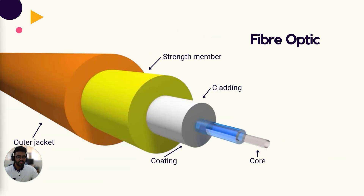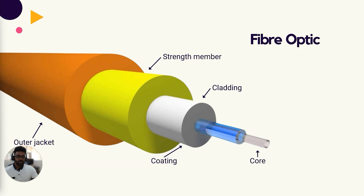There's one more bound network medium to be familiar with: fiber optic. Fiber optic cabling is quite different from coaxial or twisted pair — instead of electrical signals, it uses light pulses to transmit data. Fiber optic cables are constructed with a central core made of either clear plastic or glass, which carries light pulses. Surrounding the core is a layer of cladding with a reflective surface that redirects any stray light pulses back toward the center. Around the cladding are one or two protective layers, and everything is surrounded by a plastic sheath.